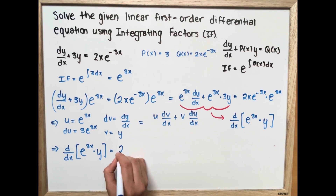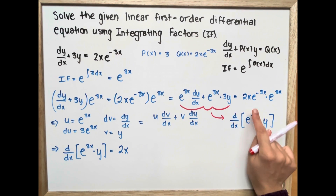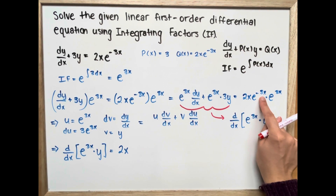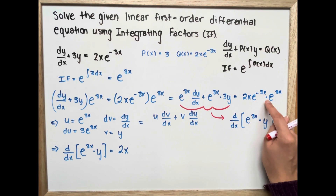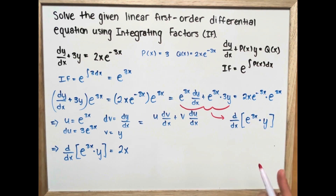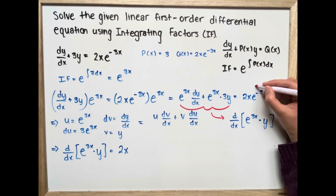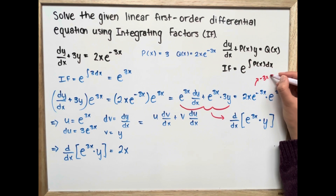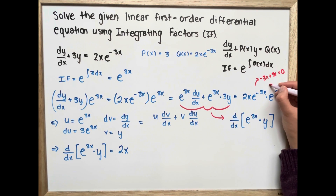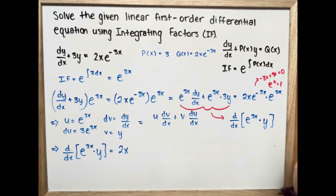On the right side, we have 2x, and because e to the power of negative 3x times e to the power of 3x follows the exponential rule — we add the exponents: negative 3x plus 3x equals 0 — so e to the 0 is just 1. Therefore our right side simplifies to just 2x.